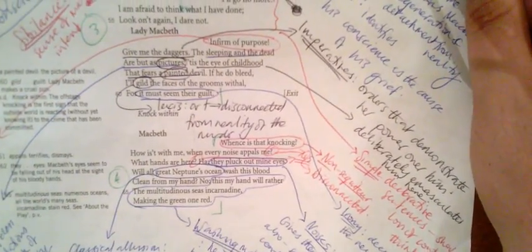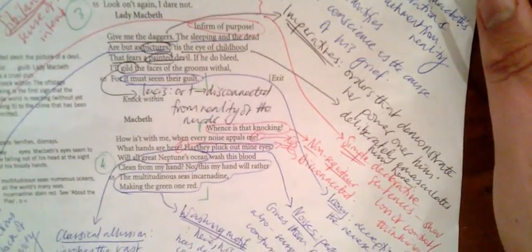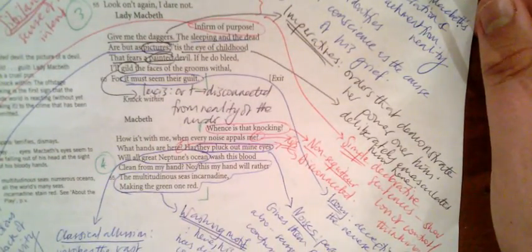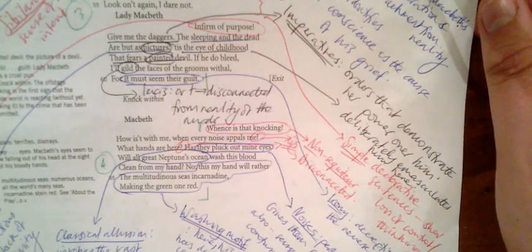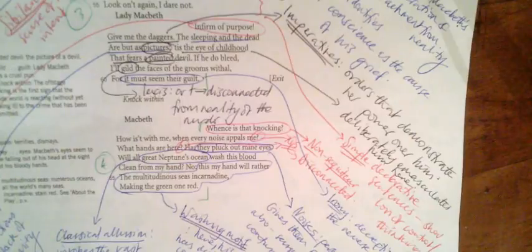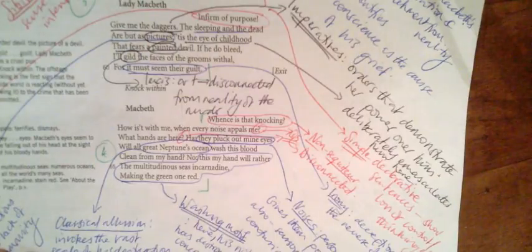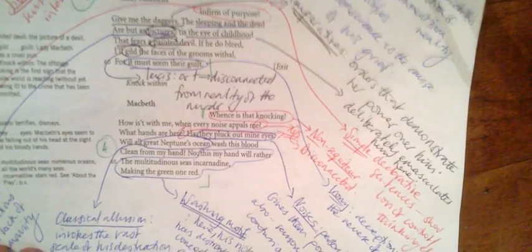There is a knock and Macbeth doesn't respond to her plotting. He just says 'Whence is that knocking? How is it with me when every noise appalls me?' The repeated questions show his disconnection from Lady Macbeth and his sense of edgy fear.